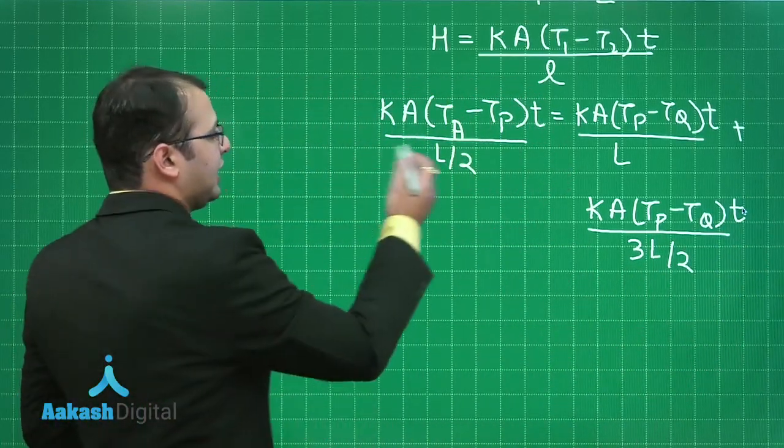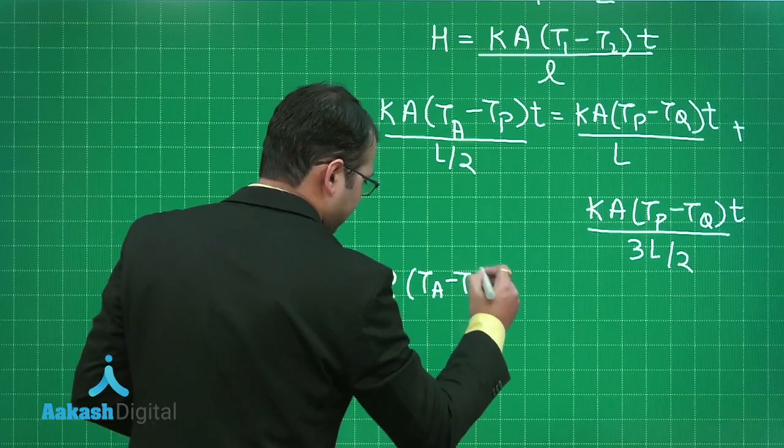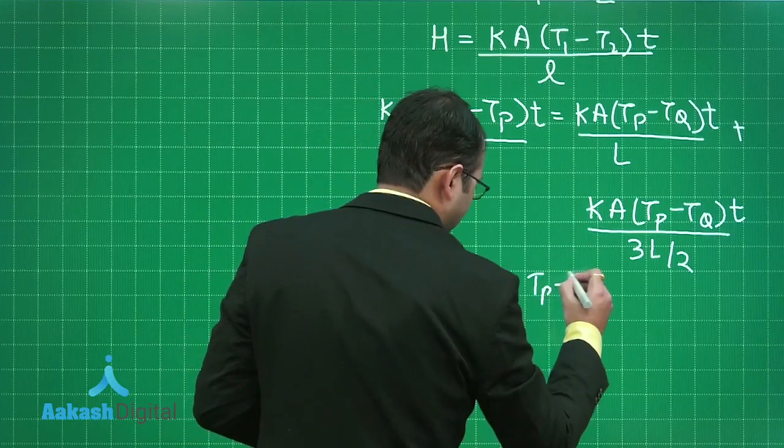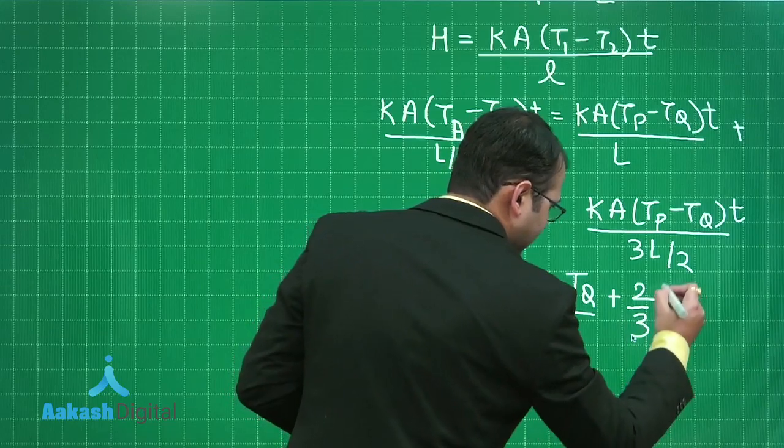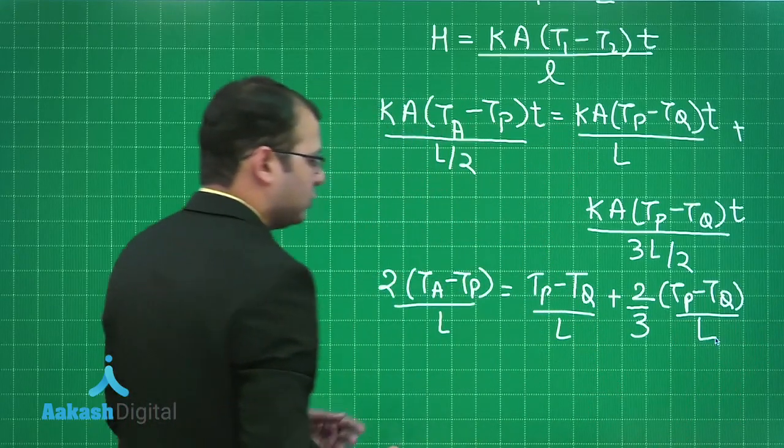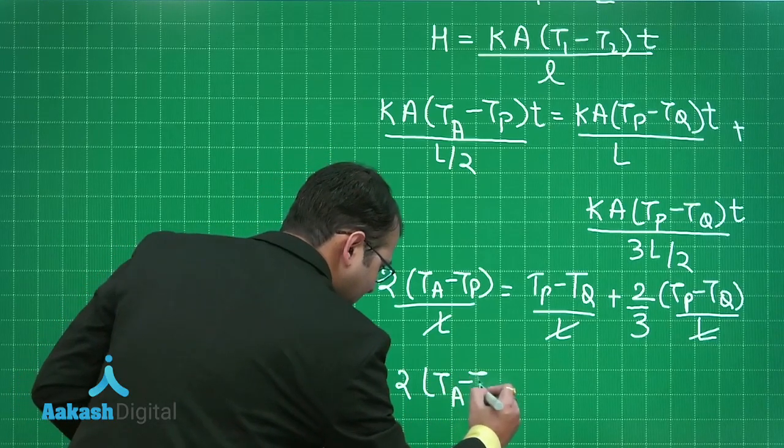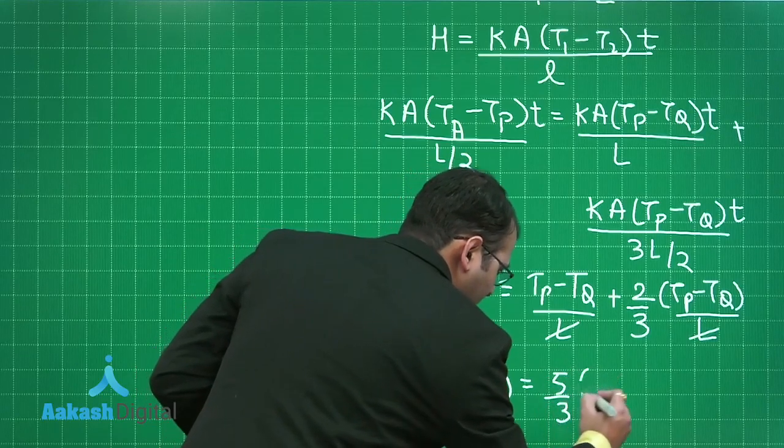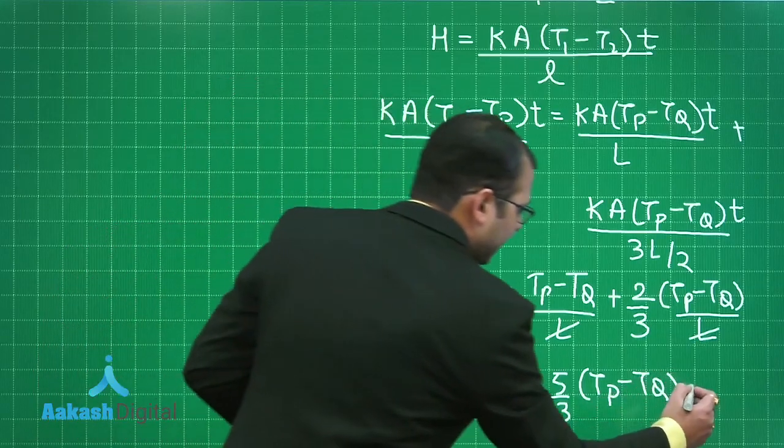Now, let's simplify it. KA and A will be cancelled out. So what is left is 2(TA minus TP) divided by L. That should be equal to (TP minus TQ) divided by L plus (2/3)(TP minus TQ) divided by L. Now, this L again can be cancelled out. So what is the final equation? Twice of TA minus TP, that should be equal to 5 by 3 (TP minus TQ). Let's take this as equation 1.